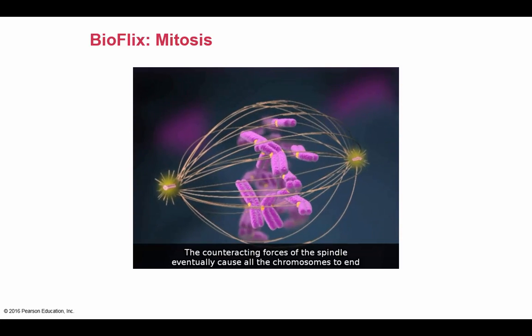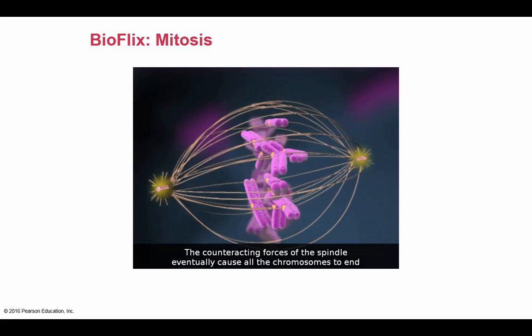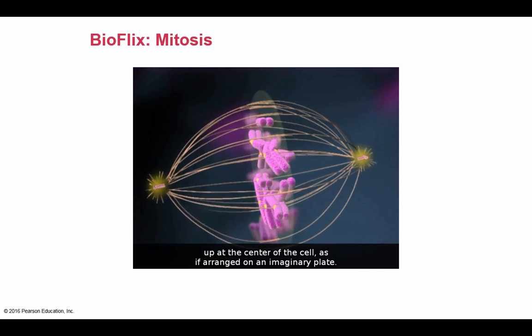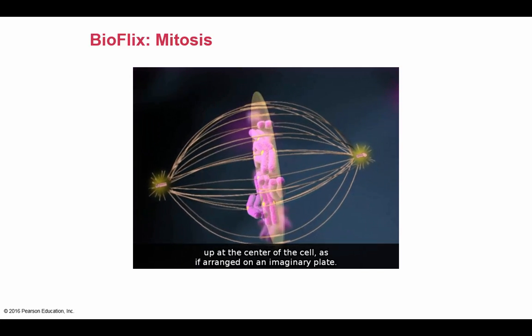The counteracting forces of the spindle eventually cause all the chromosomes to end up at the center of the cell, as if arranged on an imaginary plate.